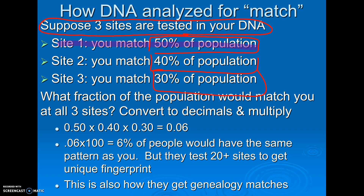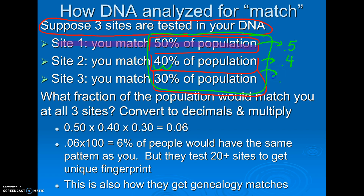If they wanted to know what are the chances that a person would match you at all three cut sites, you change your percents to frequencies and do 0.5 times 0.4 times 0.3. Multiply those together and you get 0.06 — which is 6% of the population that would match you at all three of these sites.